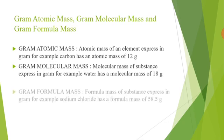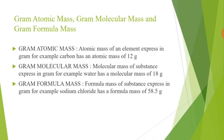Next is gram formula mass. When formula mass of a substance is expressed in grams, then it is called gram formula mass. An ionic compound is represented by the formula unit. For example, formula mass of sodium chloride is 58.5 amu, therefore gram formula mass of sodium chloride is 58.5 grams.